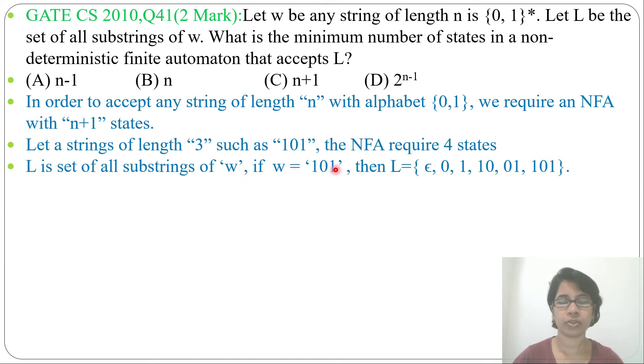Now, what is the language? The language is all substrings of w. So if w equals "101", then L will be {ε, 0, 1, 10, 01, 101} - all substrings of w. I already discussed what is substring, just go through that lecture. Now we need to design an NFA that will accept all the substrings.